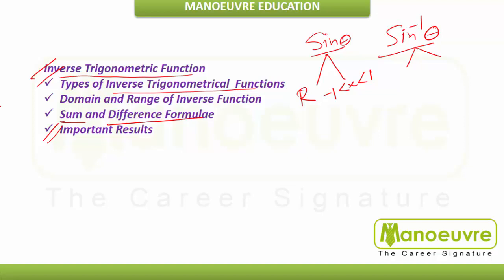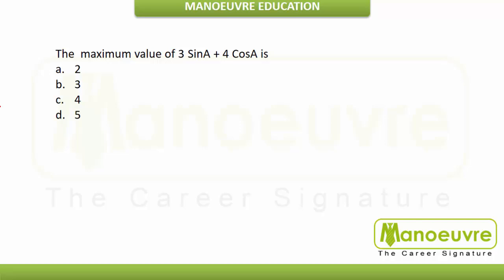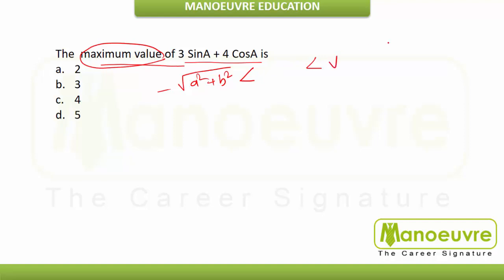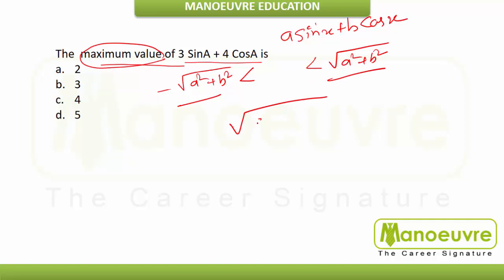Let's solve a sample question: what is the maximum value of 3·sin A + 4·cos A? We know the shortcut for expressions of the form a·sin x + b·cos x: the minimum value is −√(a² + b²) and the maximum value is +√(a² + b²). Substituting a = 3 and b = 4: 3² = 9, 4² = 16, so 9 + 16 = 25, and √25 = 5. The maximum value is 5. This takes only 5 to 10 seconds once you know the shortcut.